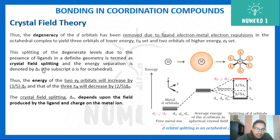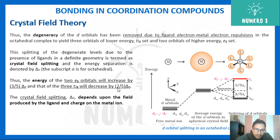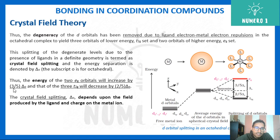The energy separation is denoted by delta_o (o for octahedral). The energy of the two eg orbitals is raised by (3/5)delta_o and the three t2g orbitals are lowered by (2/5)delta_o. Multiplying: 3 × (2/5)delta_o = (6/5)delta_o decrease, and 2 × (3/5)delta_o = (6/5)delta_o increase — these cancel out to zero. So one set, t2g, goes lower and eg goes higher in energy.